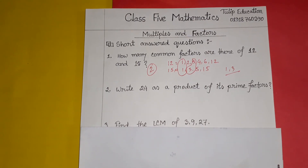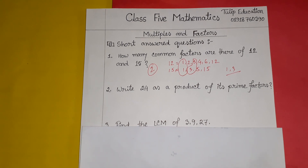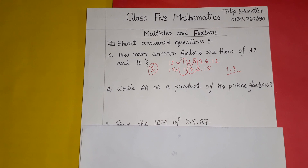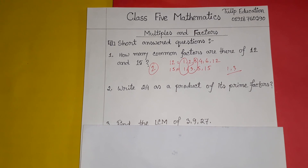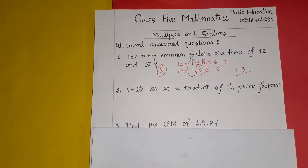The second question is: write 24 as a product of its prime factors. Do you know what prime factors are? Prime factors are numbers which are only divisible by one and themselves — numbers like 2, 3, 5, and 7. Now let's represent 24 as a product of its prime factors.